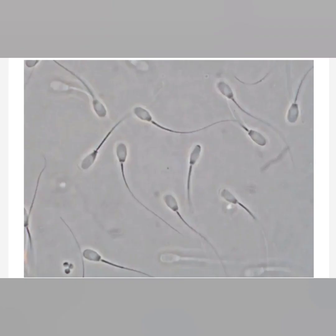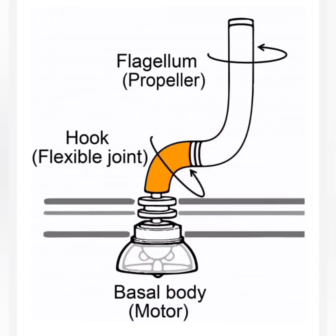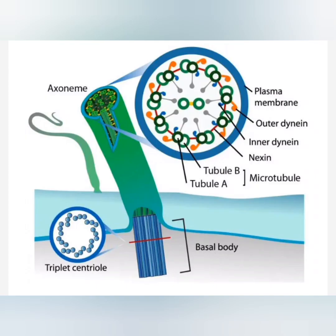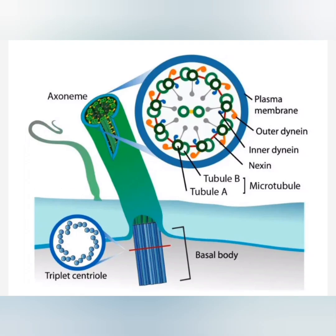Flagella movement: flagella are complex, hair-like, filamentous cytoplasmic structures present on the surface of the cell. They are mainly responsible for motility. Flagella are composed of protein like flagellin, fixed in the cell envelope.